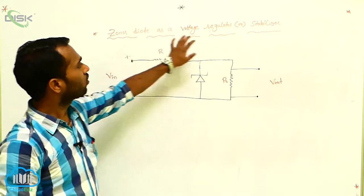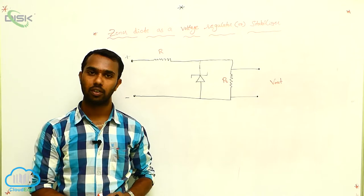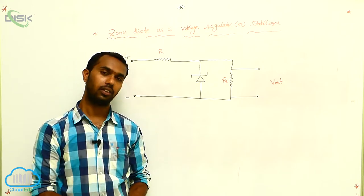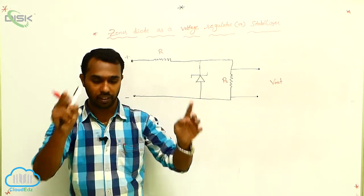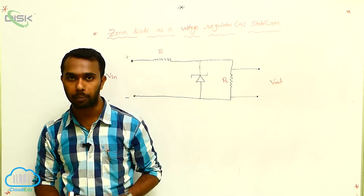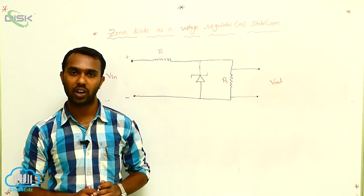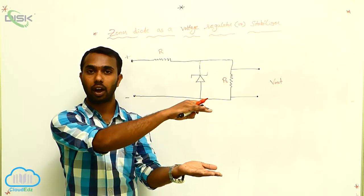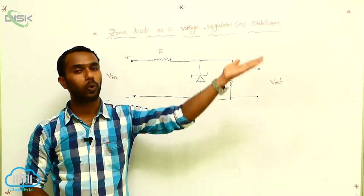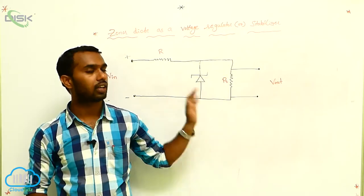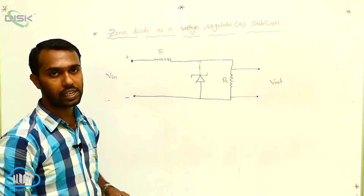What is the stabilizer used for? For a TV, why do we connect a stabilizer? Simple — if the input voltage changes, our TV gets damaged. To prevent damage from high or low voltage, we use a stabilizer. The stabilizer always maintains constant voltage, supplying constant voltage to our TV even though input voltage increases or decreases.